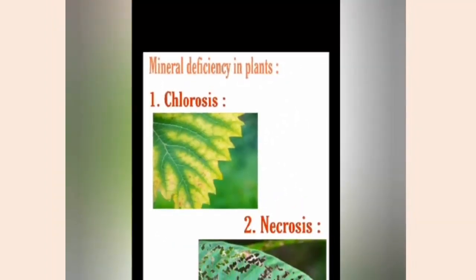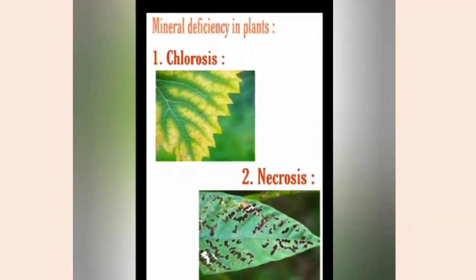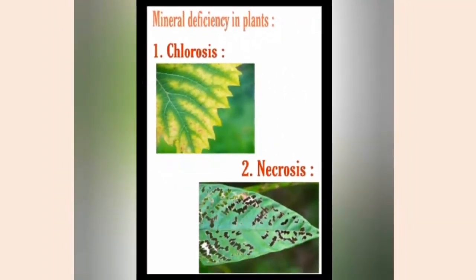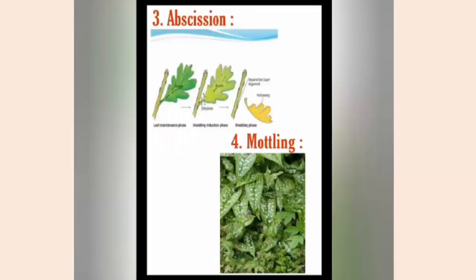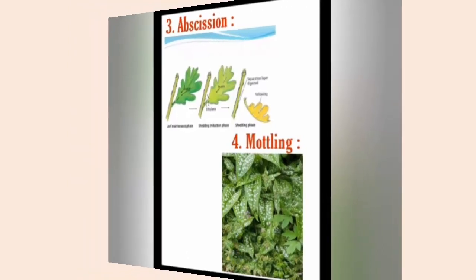General deficiency in plants causes many diseases. Loss of chlorophyll resulting in yellowing of leaf is called chlorosis. Necrosis is localized death of tissue of leaf. Premature fall of flower, fruit, and leaf is called abscission. Appearance of green and non-green patches on leaf is called mottling.